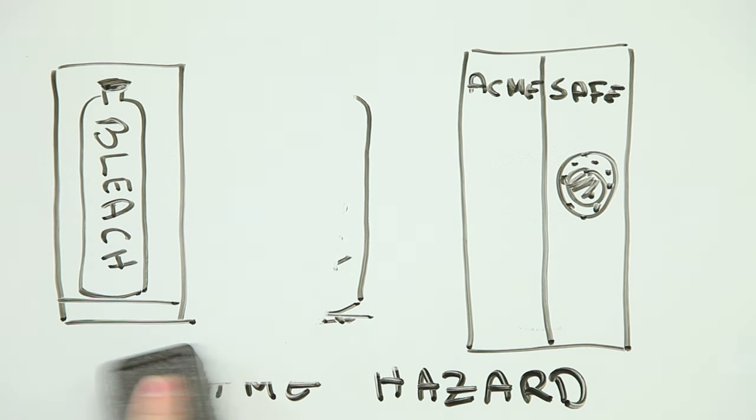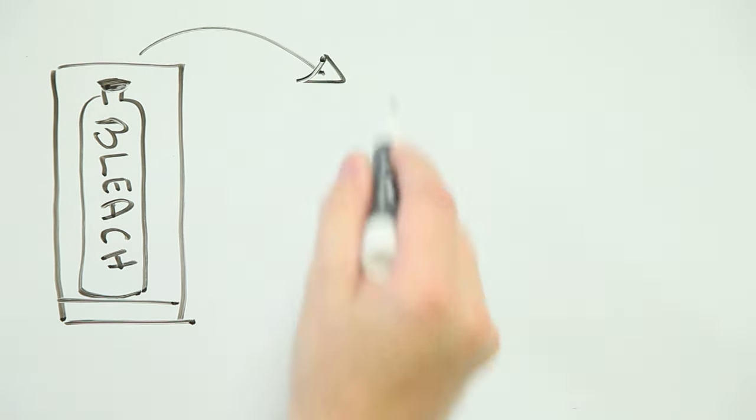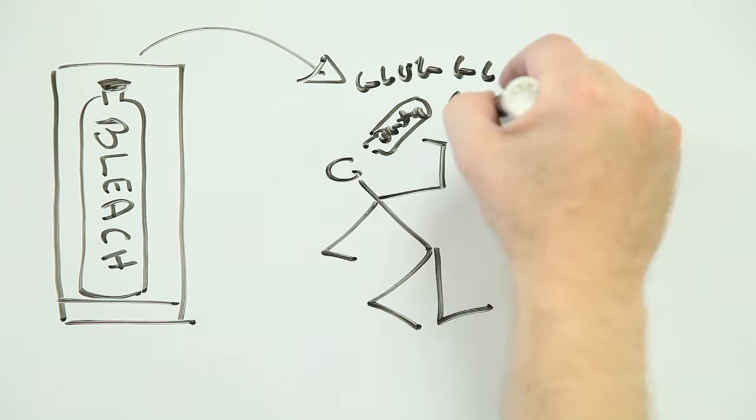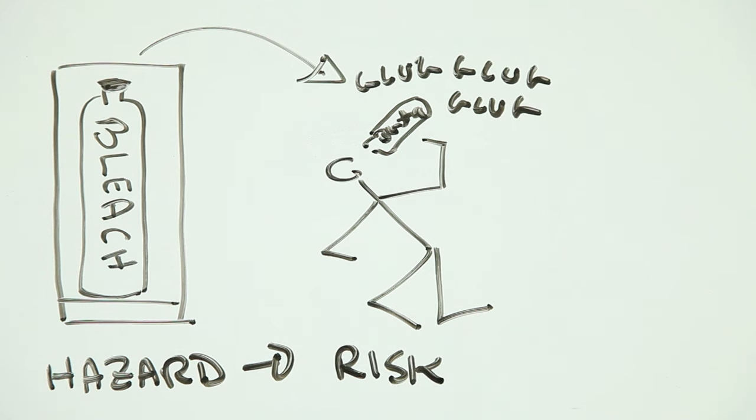Of course, as soon as someone does do something really stupid, like drink the stuff, there's a real probability of them harming themselves. The hazard is transformed into a risk.